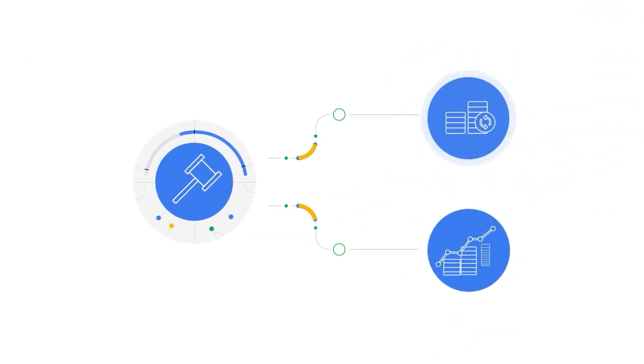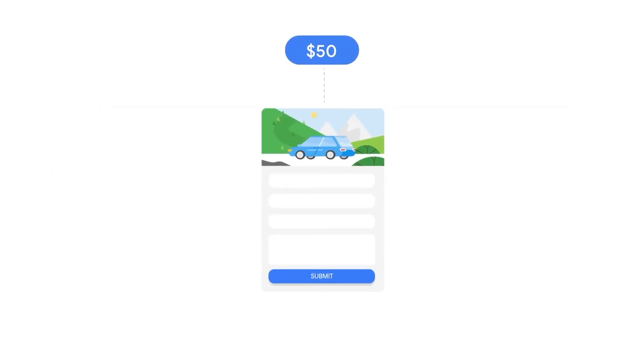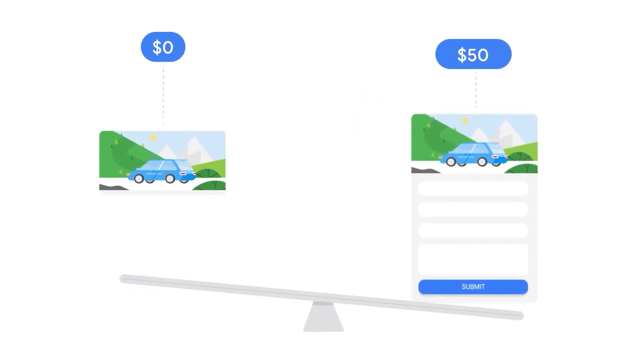Setting your bidding strategy targets correctly is the hardest part of Google Ads to get right. Because it is the hardest part, it's something that should never be taken lightly. Whenever you introduce a target bidding strategy, whether it be target ROAS or target CPA, that is a significant change to your Google Ads campaigns — probably the most significant change you can make.